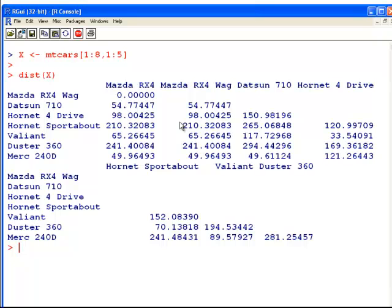Here's a couple of the distance measures between the various values. You might see that the Mazda RX4 Wagon and Mazda RX4 actually are identical as far as the 5 numeric variables we are using are concerned. The Hornet Sportabout, the 4th case, has a distance measure, a Euclidean distance measure of 210.32 from the Mazda RX4 and so on.